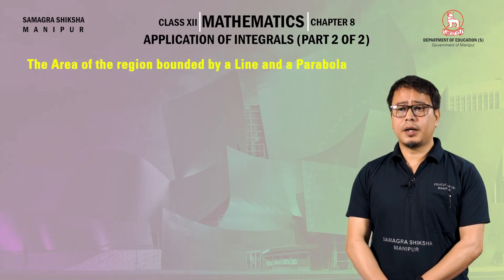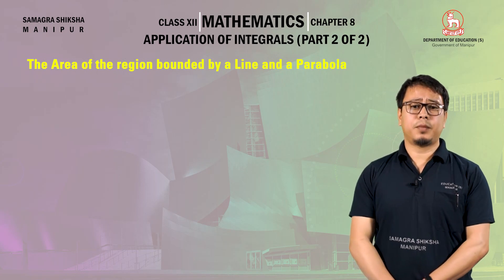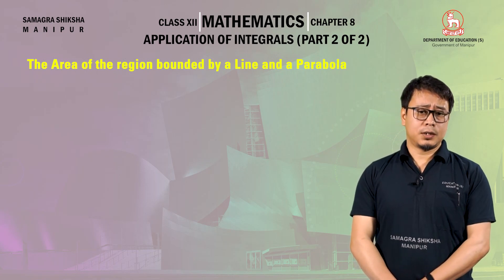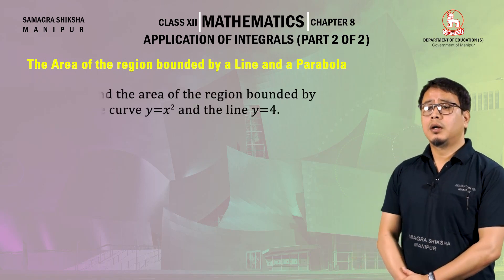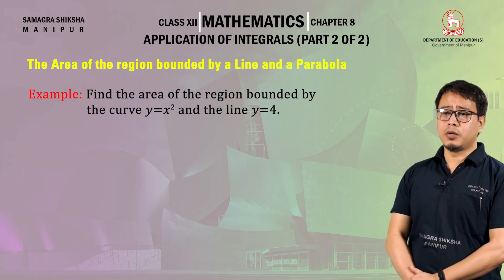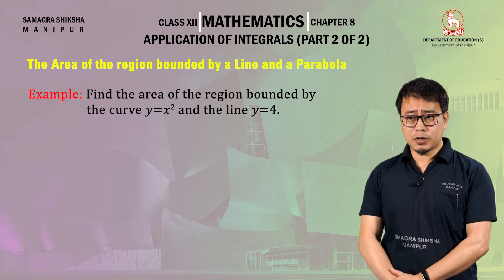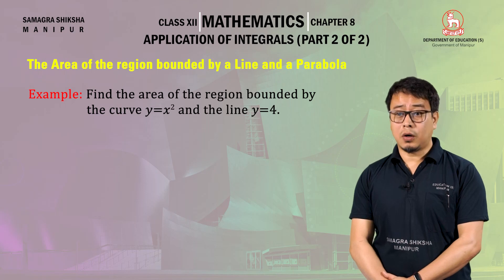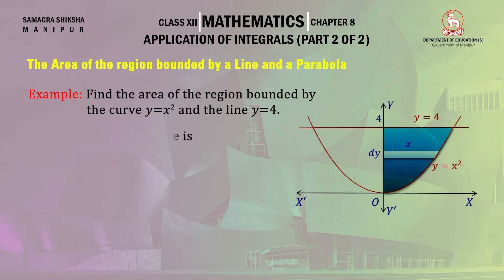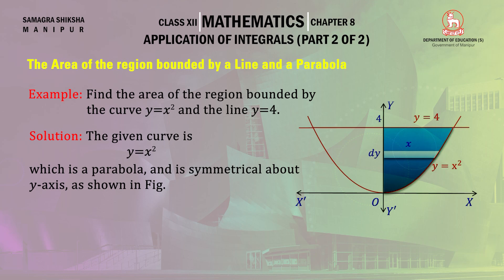The area of the region bounded by a line and a parabola — example: find the area of the region bounded by the curve y equal to x square and the line y equal to 4. The given curve is y equal to x square, which is a parabola opening upward and symmetrical about the y-axis, as shown in the figure.